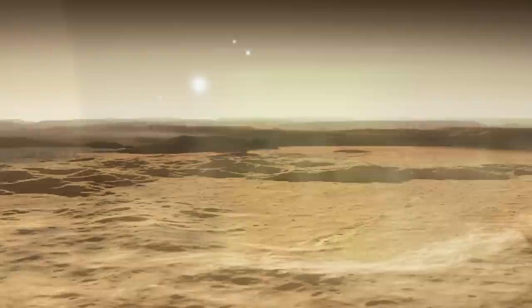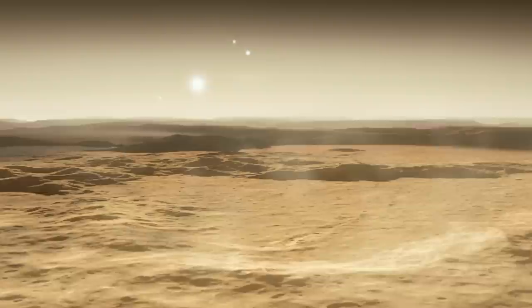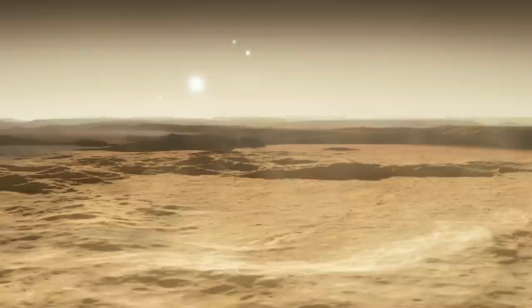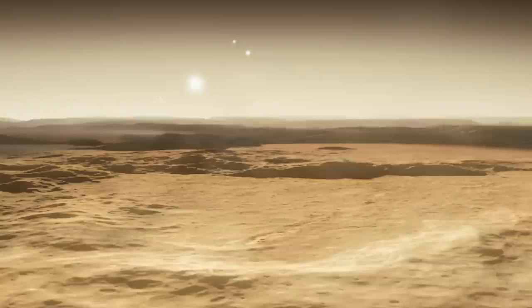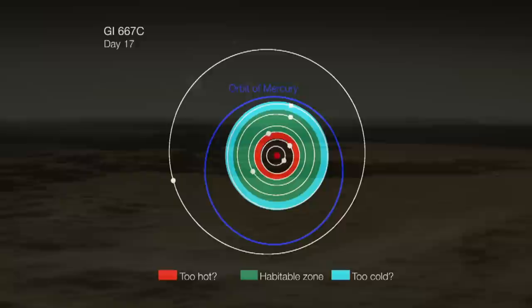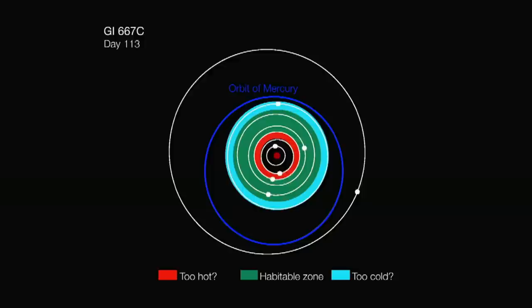Sentient beings in residence here might consider the sight of just one sun rising to be boring. Certainly their world is anything but. Their parent star is slightly fainter and cooler than our sun. That means that the habitable zone is closer and narrower than in our solar system. In fact, it would fit entirely within the orbit of our Mercury.